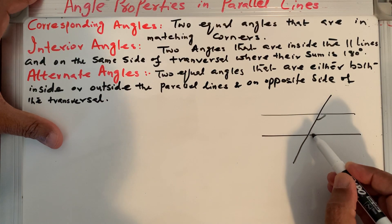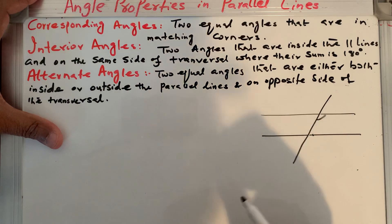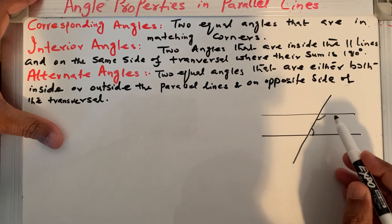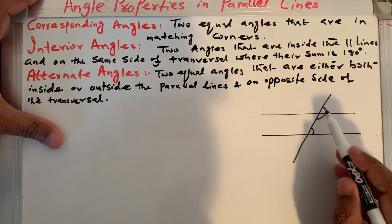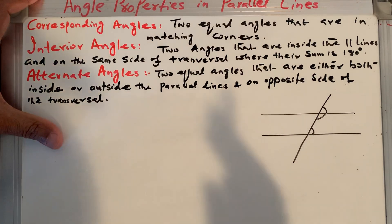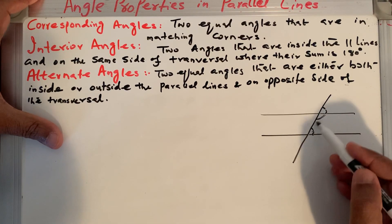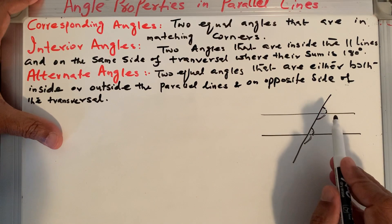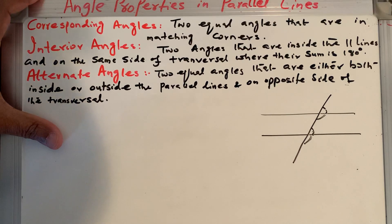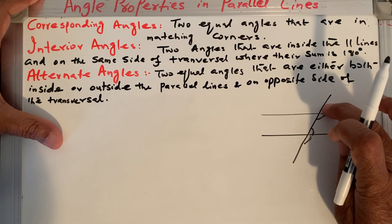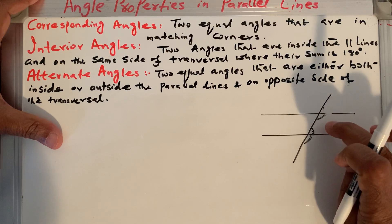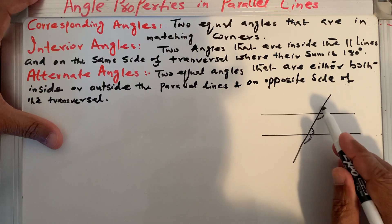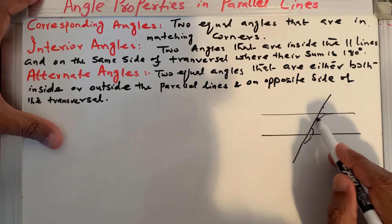I can make them like this — this one and this one, on the same side of the transversal. This angle equals this angle and this angle equals this angle — they are on the same side of the transversal. The angles inside the parallel lines — not the ones outside, but these interior angles — are the ones inside of the parallel lines.